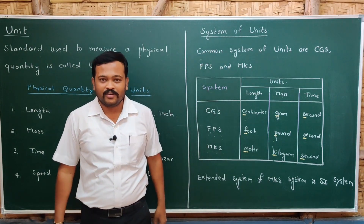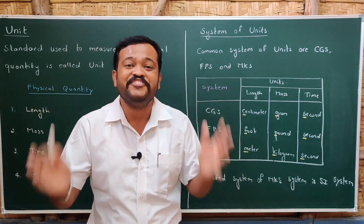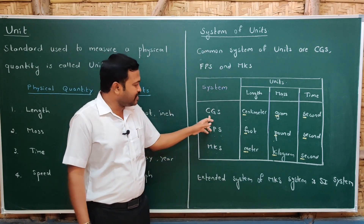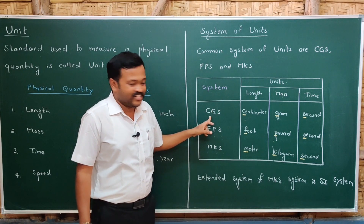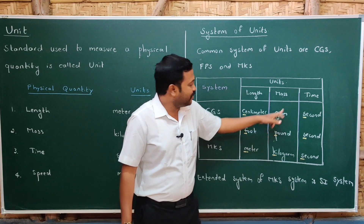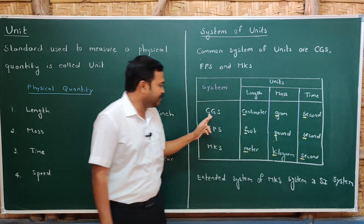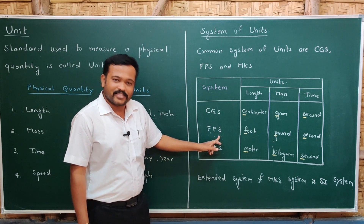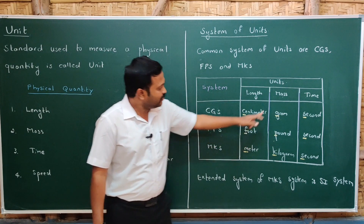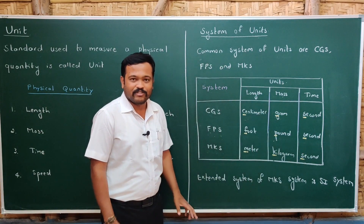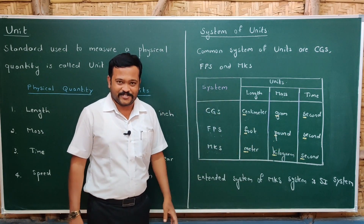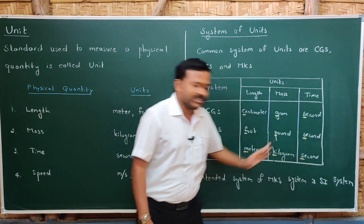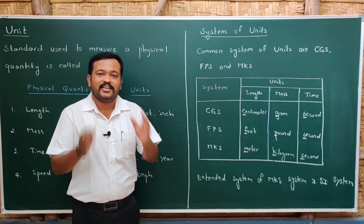Now let us move on to the system of units. In earlier days, different countries used different systems. The common systems were CGS, FPS, and MKS. In the CGS system, length is in centimetres, mass in grams, and time in seconds. In the FPS system, length is in feet, mass in pounds, and time in seconds. In the MKS system, length is in metres, mass in kilograms, and time in seconds.